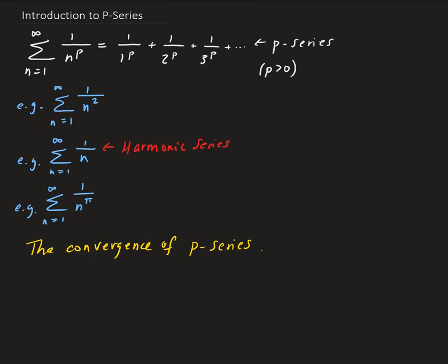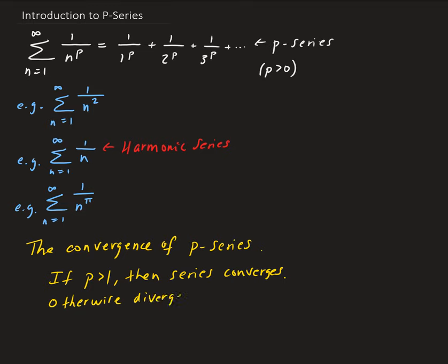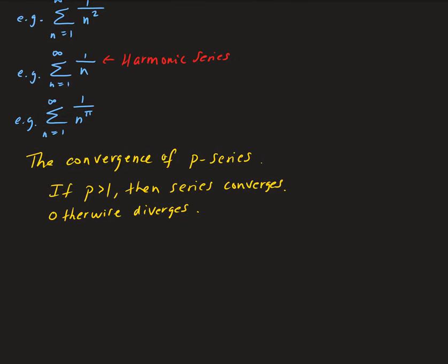If p is strictly bigger than 1, then this series will converge. Otherwise, it diverges. We're actually going to prove this result, and we can prove this by using the integral test.